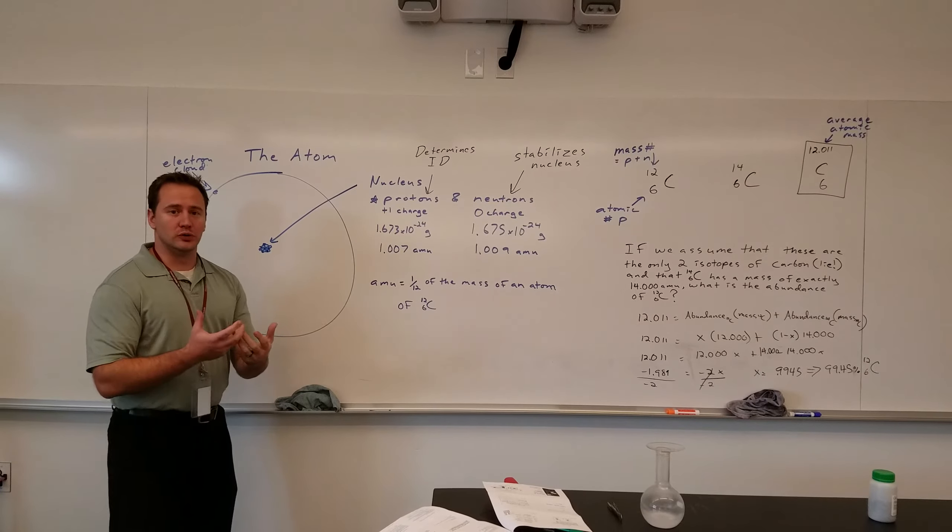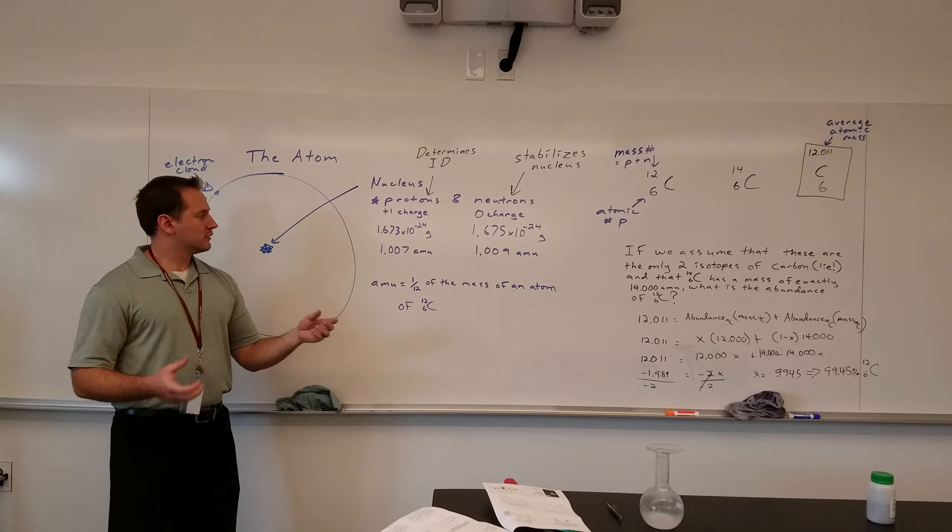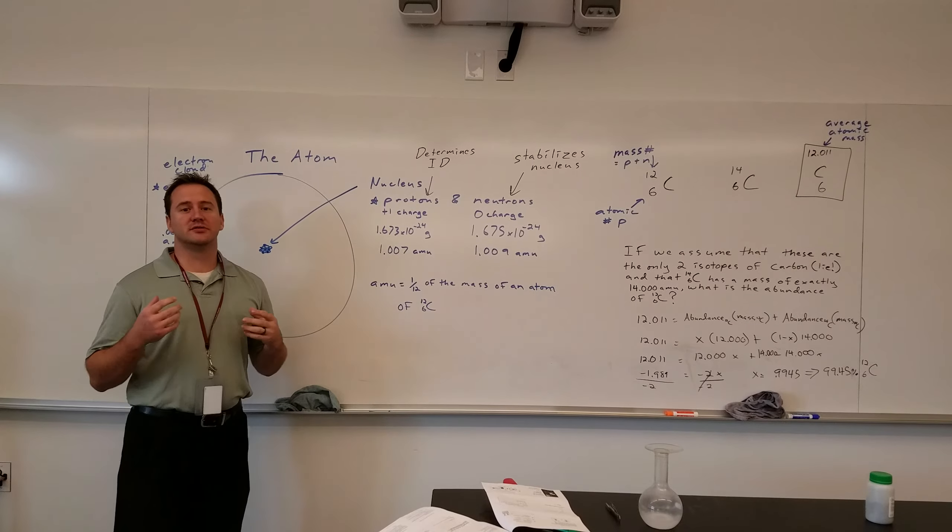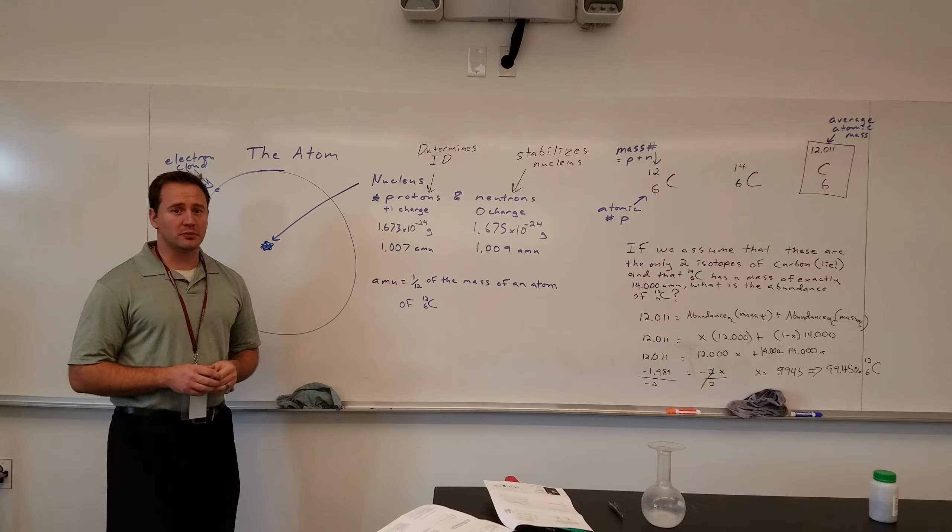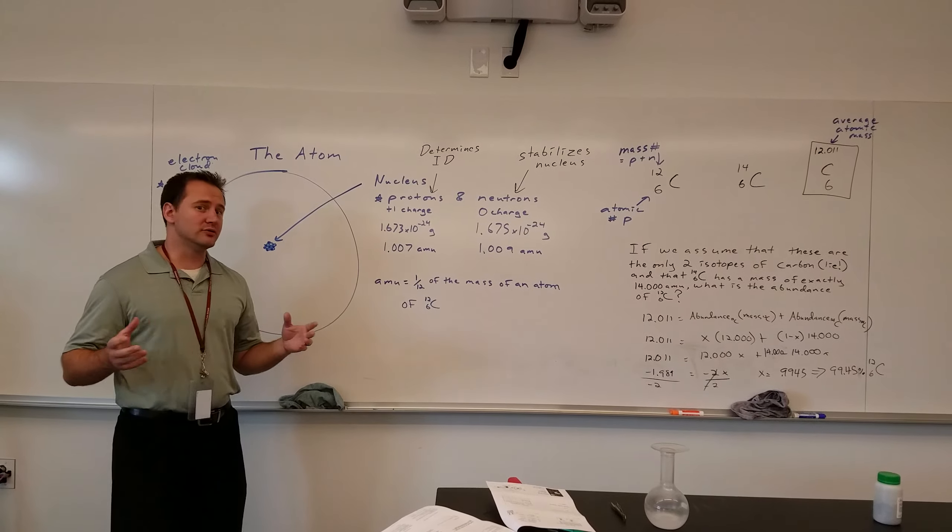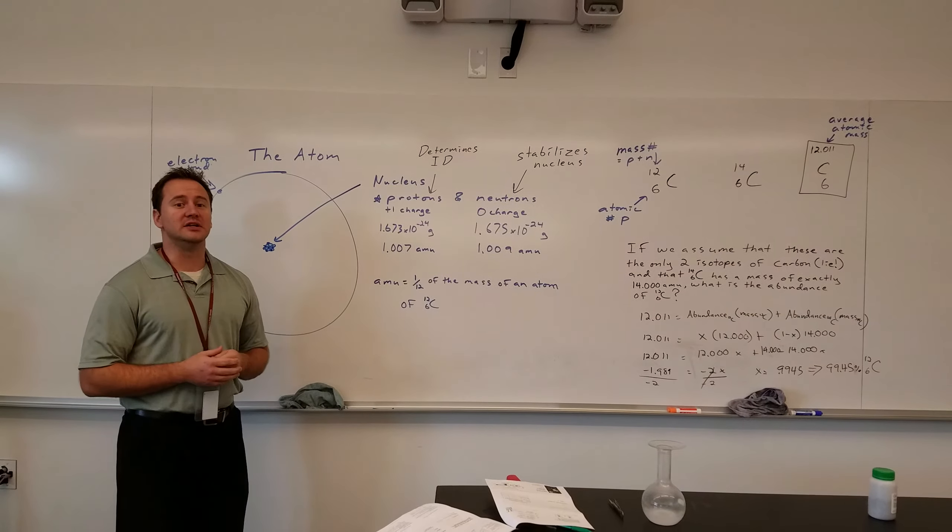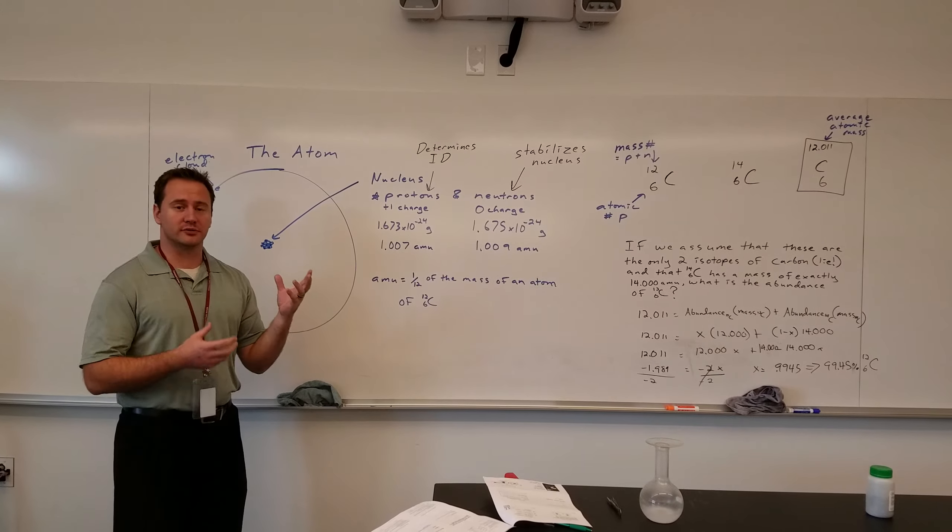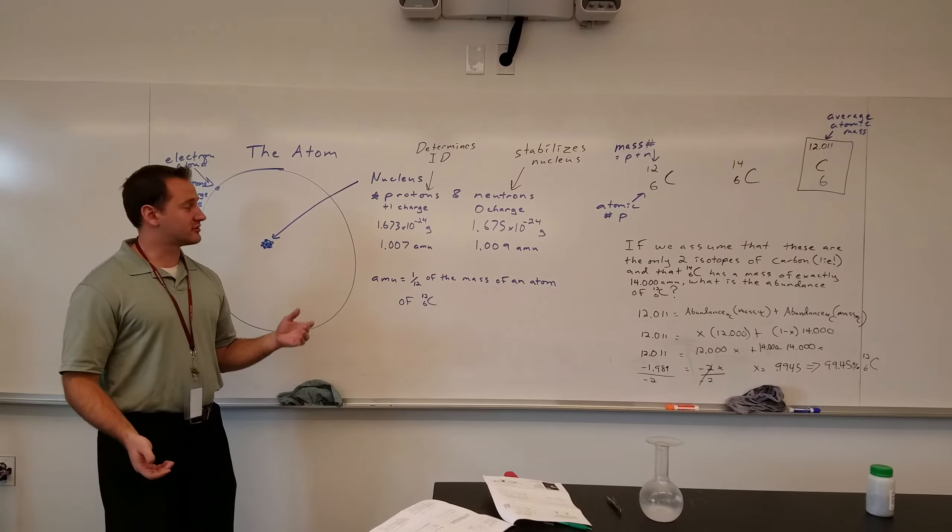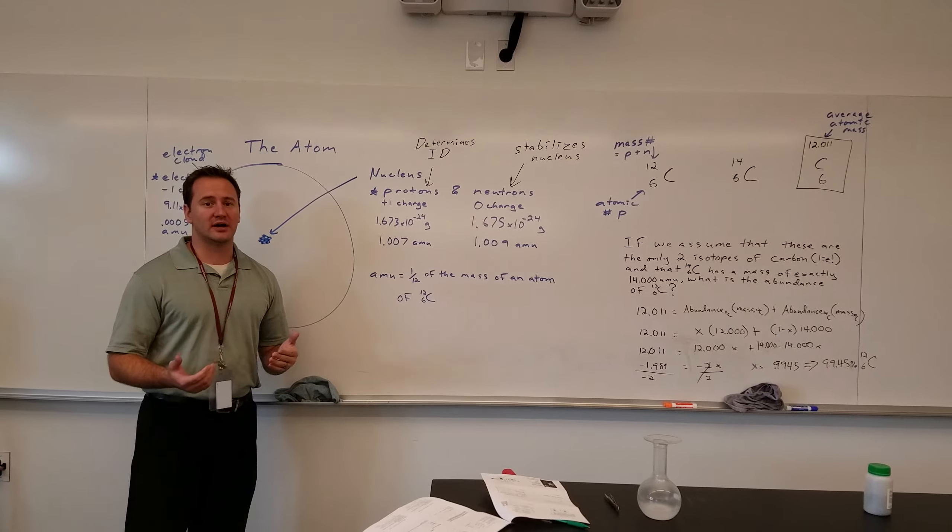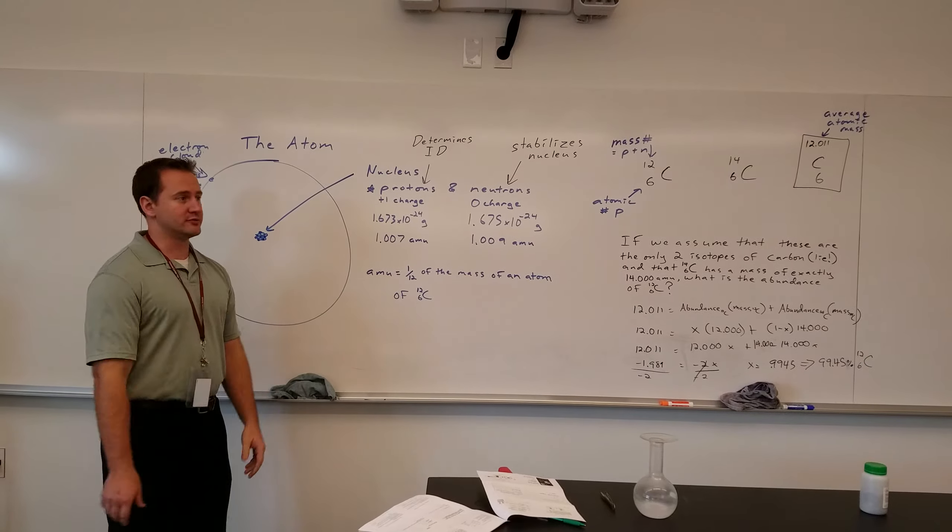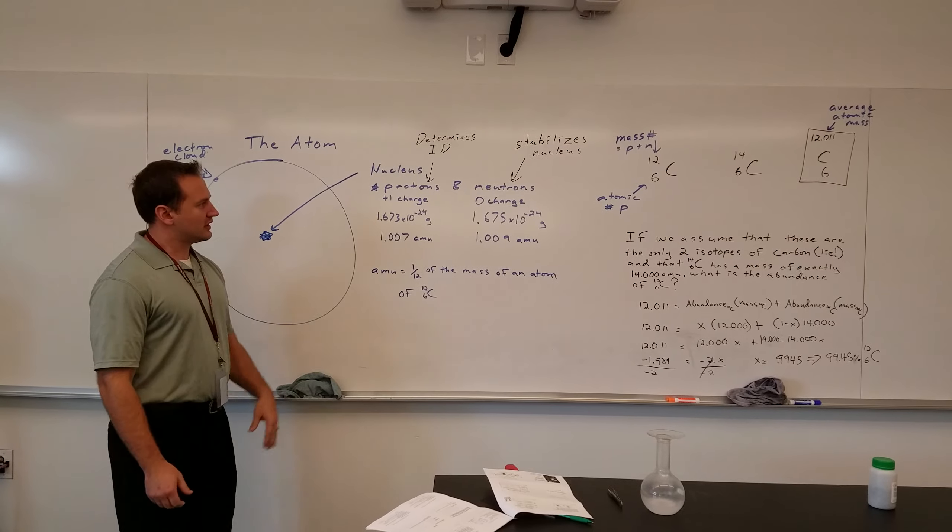And this is actually probably the most well-known scientific equation, Einstein's E equals MC squared, where energy is equal to the mass times the speed of light squared. Some of the matter actually gets converted to energy in nuclear formation reactions.